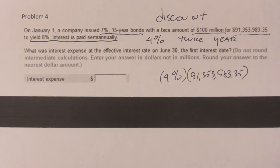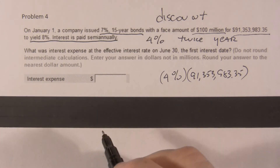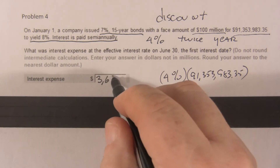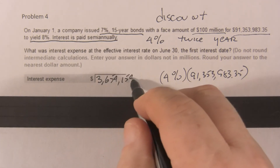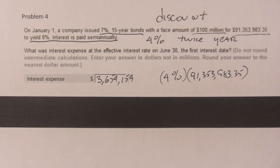Do that multiplication and you find the effective interest rate is three million, six hundred fifty-four thousand, one hundred fifty-nine dollars. The difference between that and the amount actually sent out in a check is the amount amortized as amortized discount.